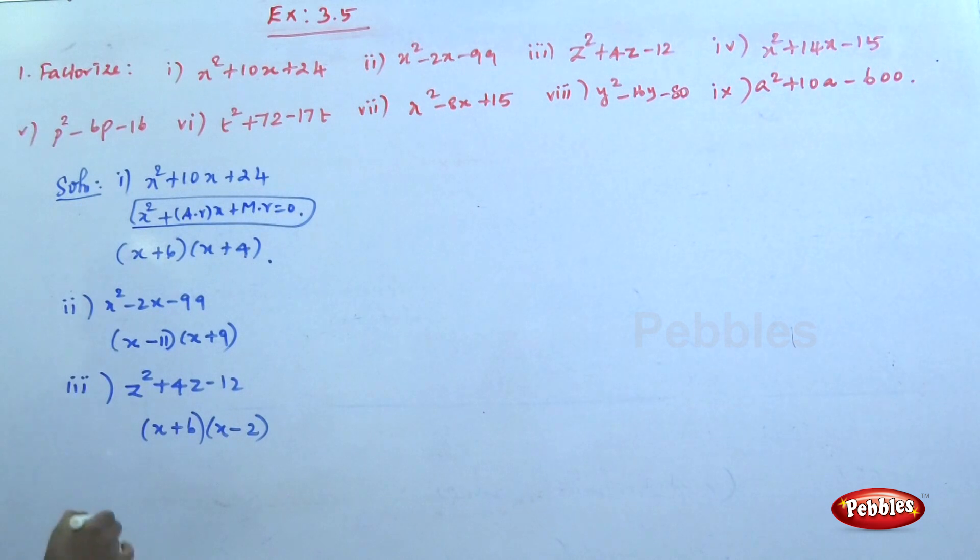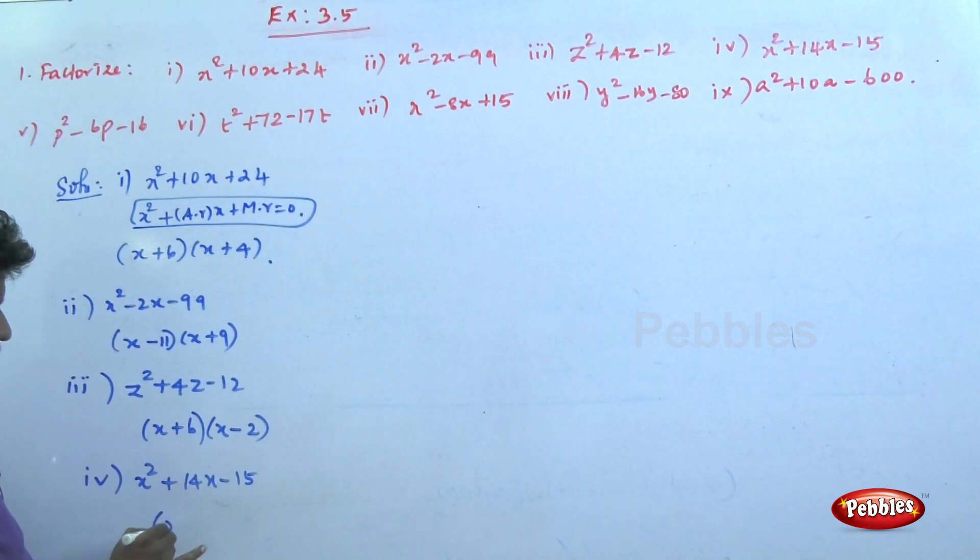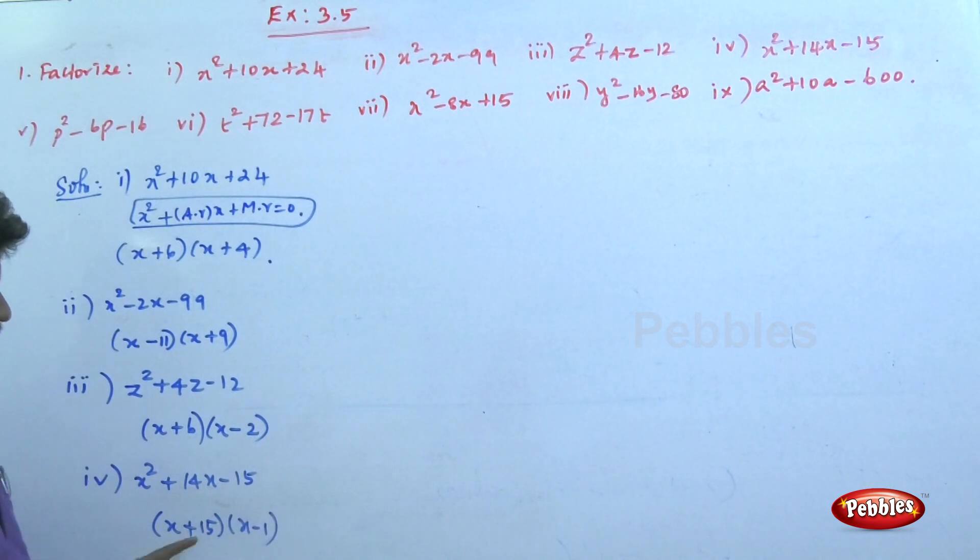The fourth problem: x² + 14x - 15. The factors are (x + 15)(x - 1). 15 - 1 = 14, 15 × -1 = -15.